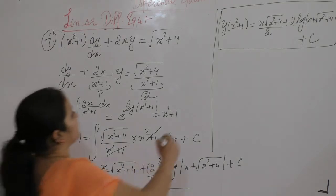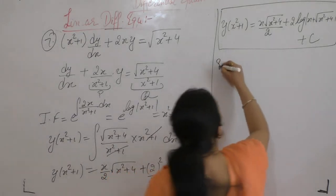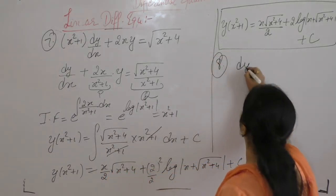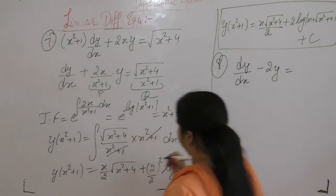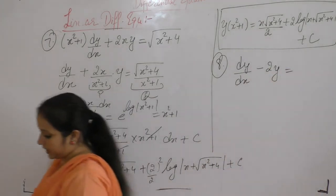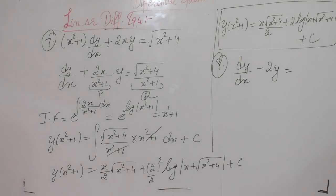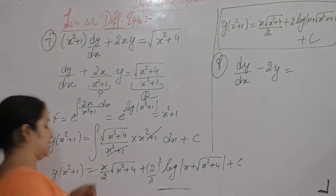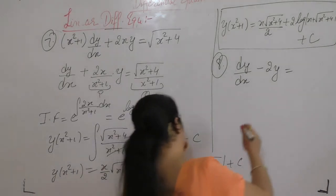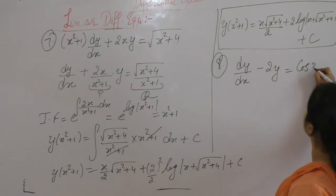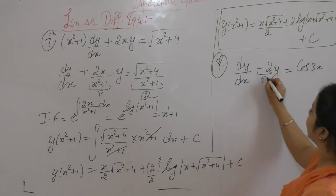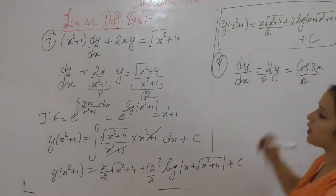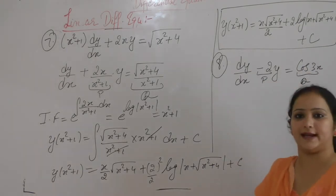Next, solve the differential equation dy/dx − 2y = cos(3x). Now we have P = −2 and Q = cos(3x).